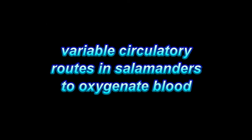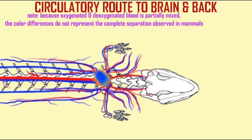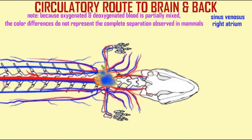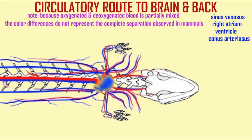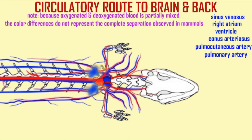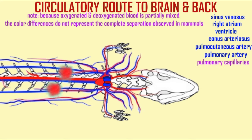In trying to trace blood from the heart to the brain and back in this simulation, it is not incorrect to say that deoxygenated blood would begin in the sinus venosus, pass to the left atrium, pass to the single ventricle, be pumped into the conus arteriosus, where it would go into the pulmonary artery, and gas exchange would occur in the pulmonary capillaries.